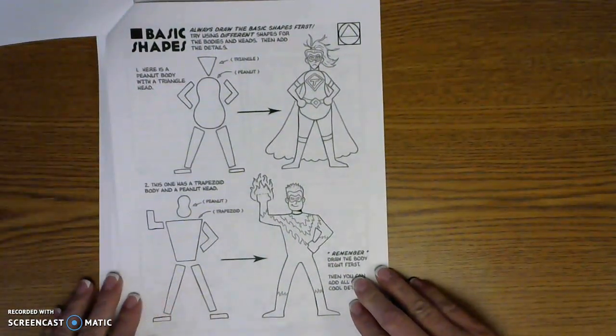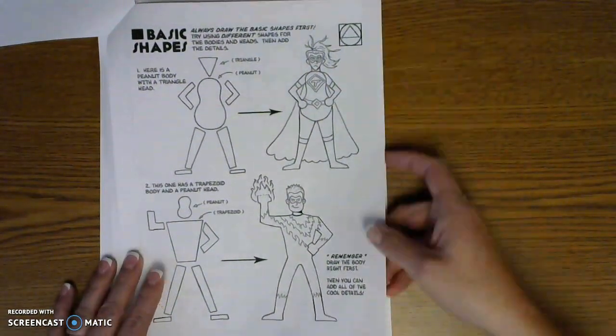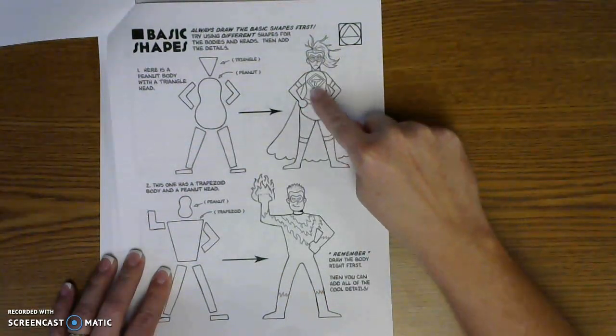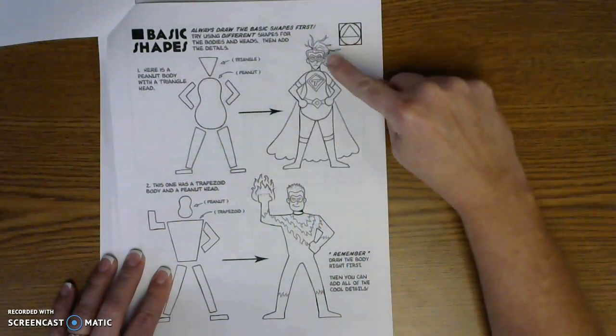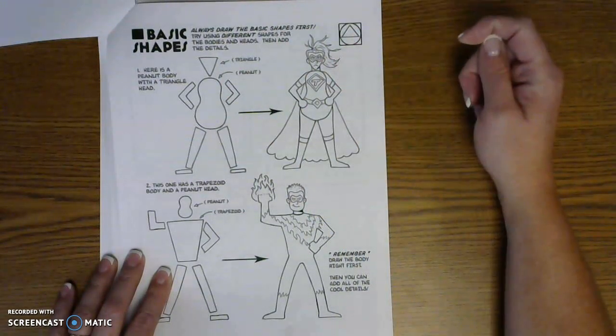Here's some other basic shapes that you're coming up with. You can see how this body shape is involved in this character. Here, her face is a triangle. This is what it looks like with hair and a mask on.